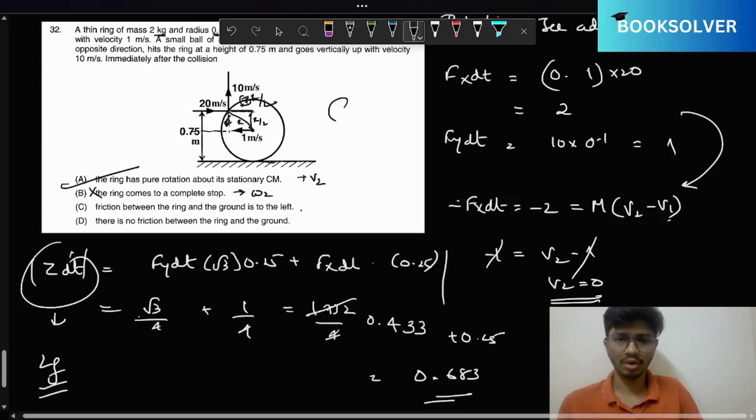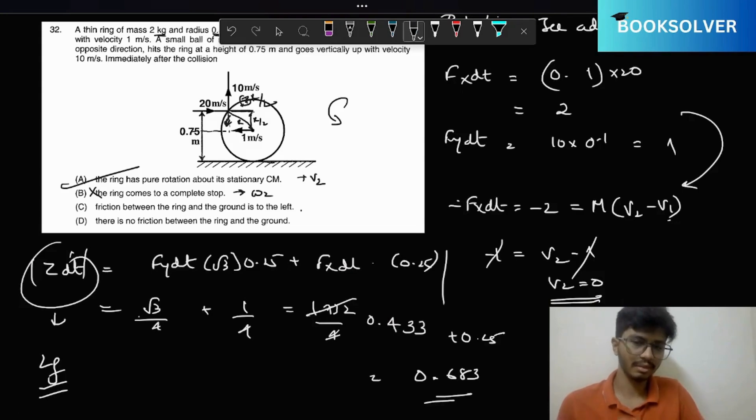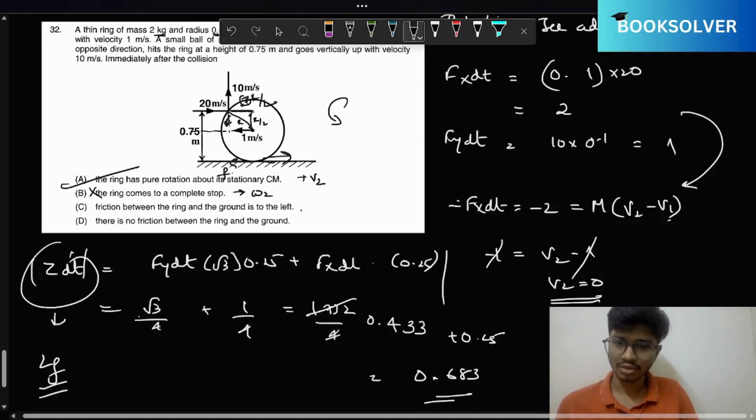With this we can say the direction of omega would be this one. There will be torque applied to make it like this, but it won't affect the direction of the momentum. It will just reduce it. So the ring will have tendency to move over here, so the friction would be acting over here.